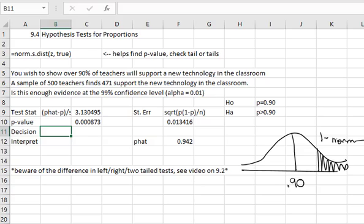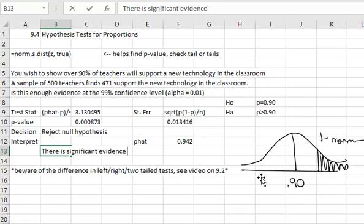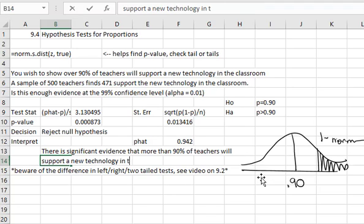Because that value is smaller than the alpha of 0.01, our decision is going to be to reject the null hypothesis. Our null hypothesis is 0.90 or 90%, and we're rejecting it in favor of the alternative, which means we successfully showed the alternative. Our interpretation, then, is there is significant evidence that the alternative hypothesis is true. More than 90% of teachers will support a new technology in the classroom.